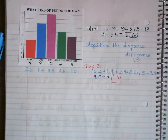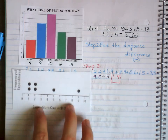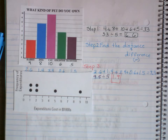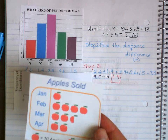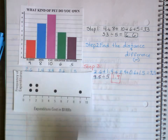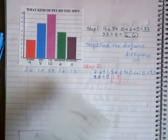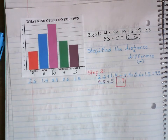So those are two examples of mean absolute deviation. In tomorrow's video, we're going to do two more examples using a dot plot, which gets a little harder, and also pictographs. If you have any questions, do not hesitate to text, call, or email me anytime.